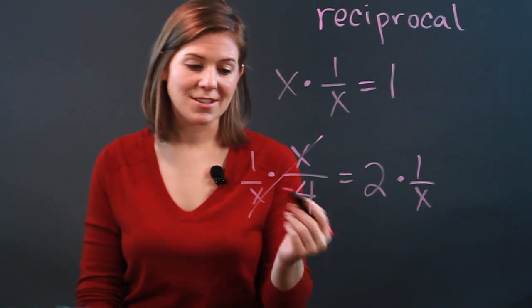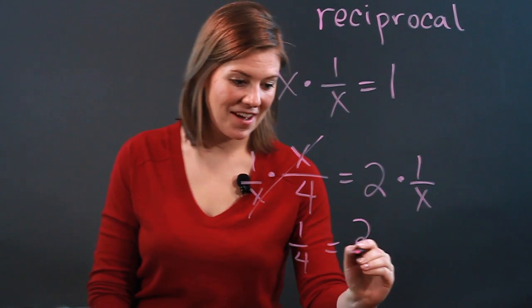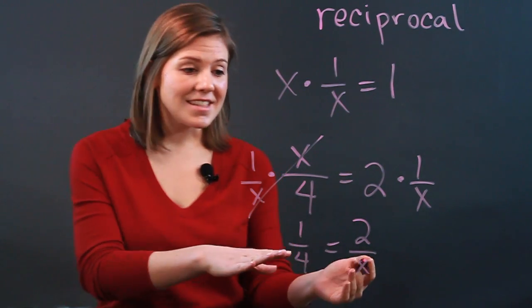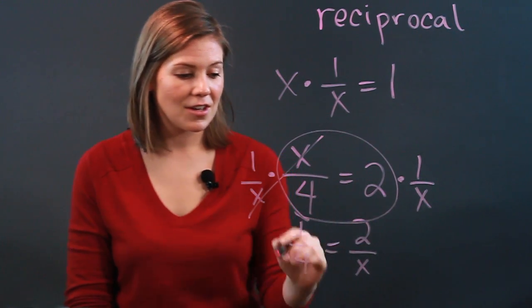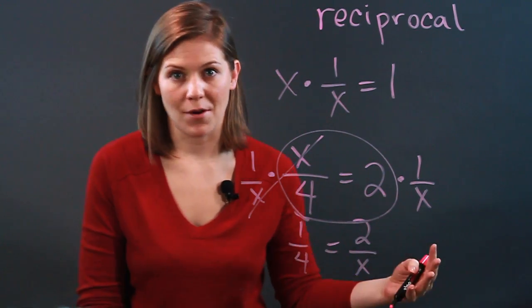Then what we get is that the x's over here cancel out. But our x ends up on the denominator on the other side. So this is not the most efficient way to solve this problem, but it is a very clear use. It has very clear uses when we do more complicated problems.